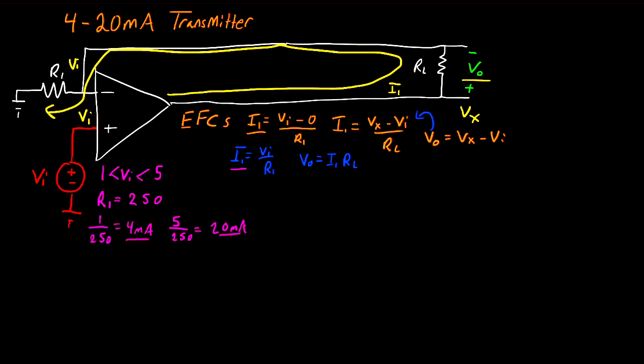So if we said that RL is equal to 250 as well, we could write that VO is equal to 250 multiplied by I. Now if I is equal to 4 milliamps, VO is going to be equal to 1 volt. And if I is equal to 20 milliamps, VO is equal to 5 volts. So in this way, we can take a voltage, turn it into a current, and then measure a voltage at the output in response to that that's the same as our input voltage.